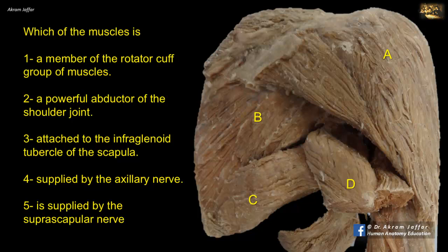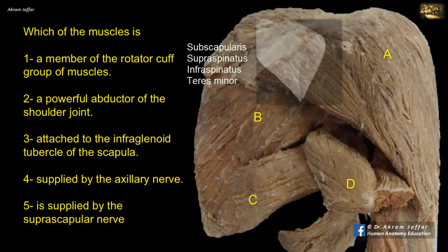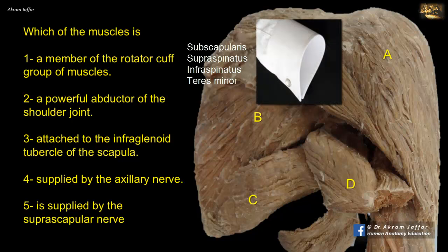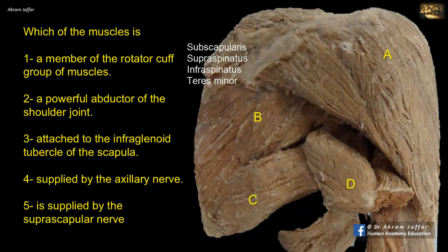Which of the muscles is a member of the rotator cuff group of muscles? Subscapularis, supraspinatus, infraspinatus, and teres minor form what is termed the rotator cuff, since these muscles, except supraspinatus, are rotators of the humerus, and since they form a musculotendinous cuff around the shoulder joint. The tone of these muscles is very important for holding the head of the humerus into the glenoid fossa of the scapula, so they are important in the stability of the shoulder joint.